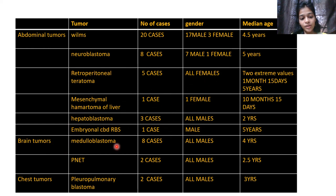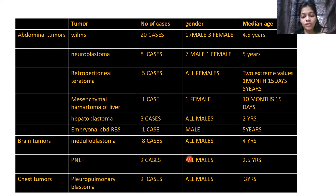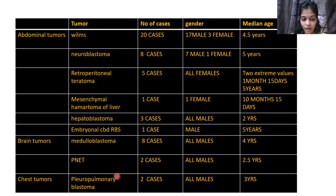Coming to the brain tumours, we came across medulloblastoma and PNET. We saw 8 cases of medulloblastoma — all males — and 2 cases of PNET tumours, also all males. Under chest tumours, we got 2 cases of pleuropulmonary blastoma, both in males.